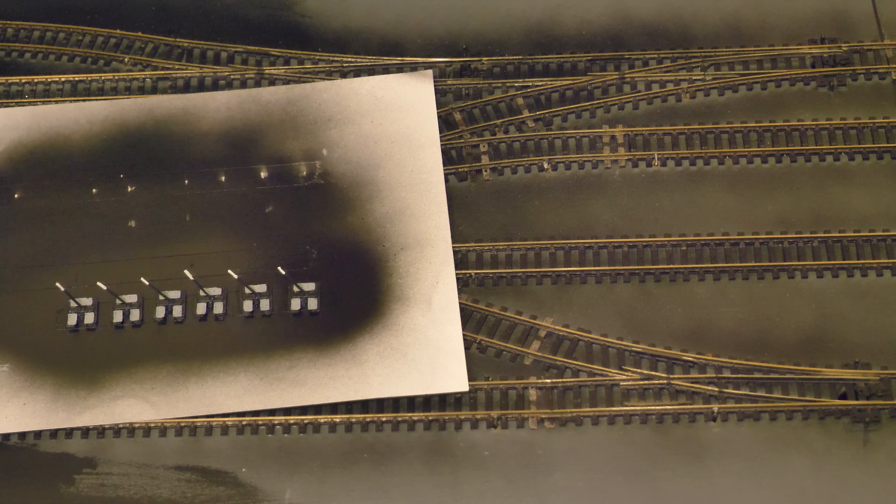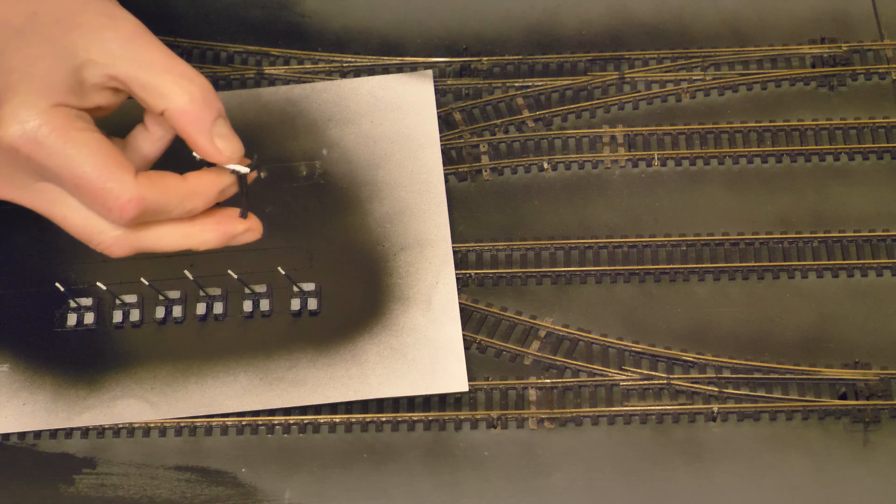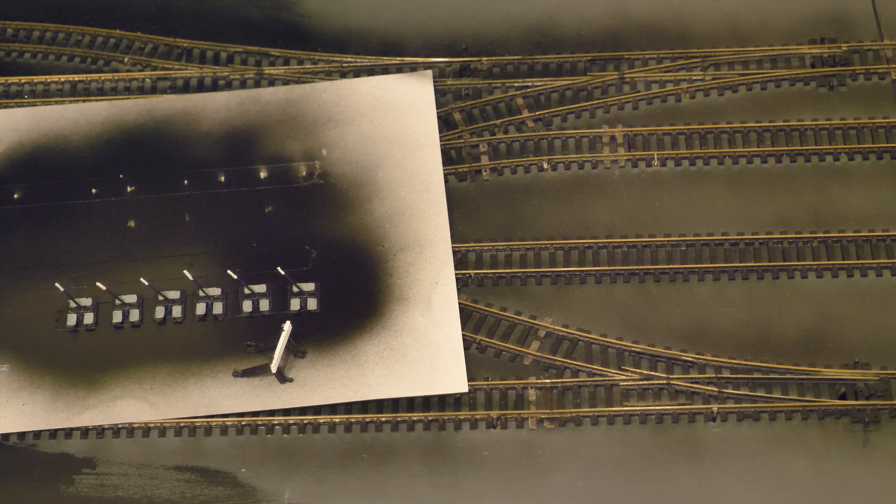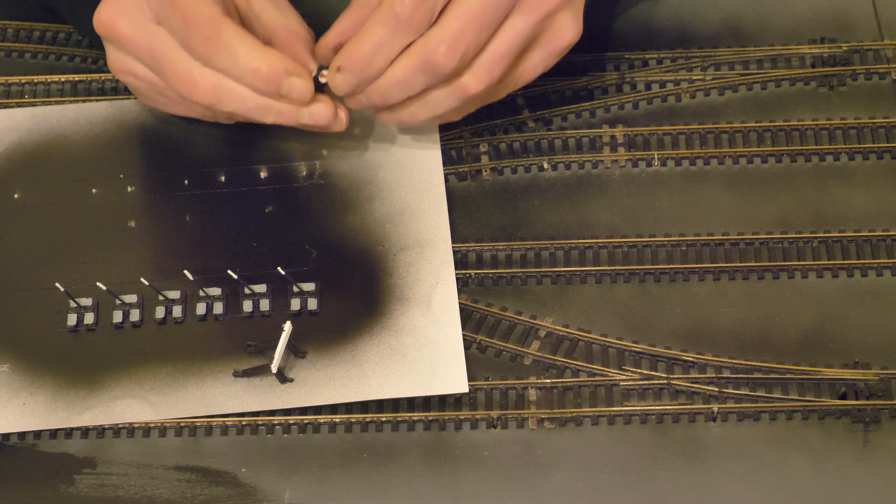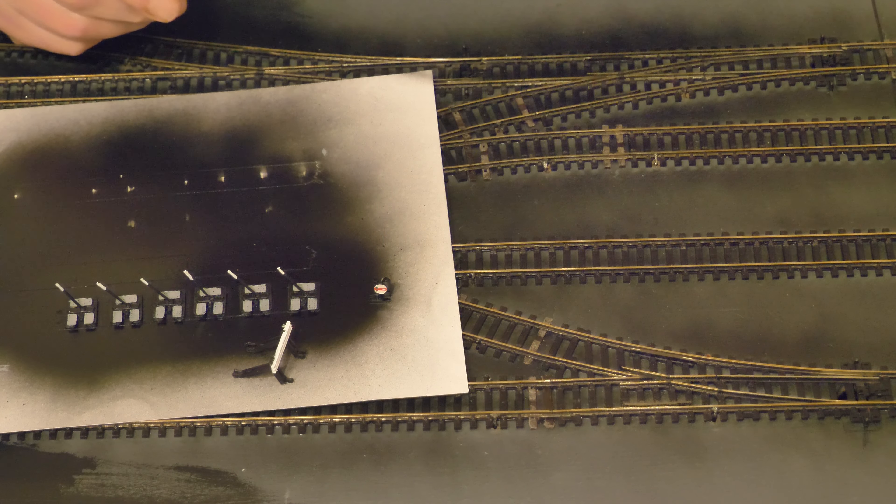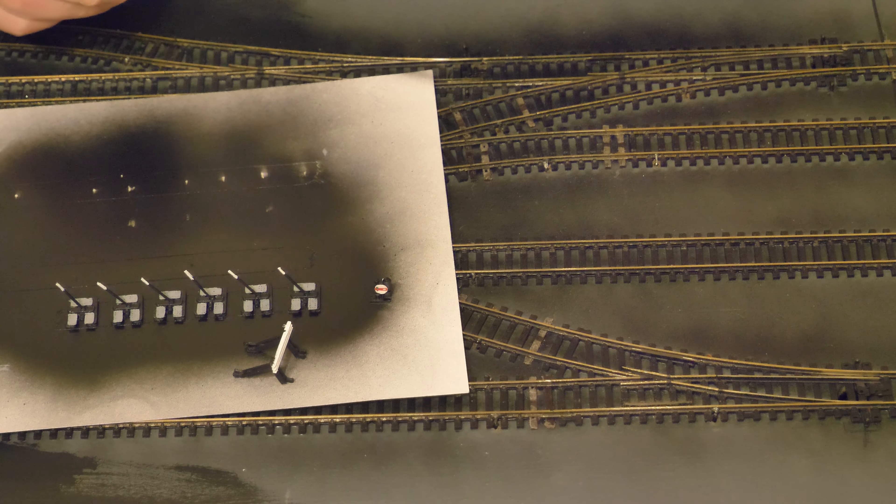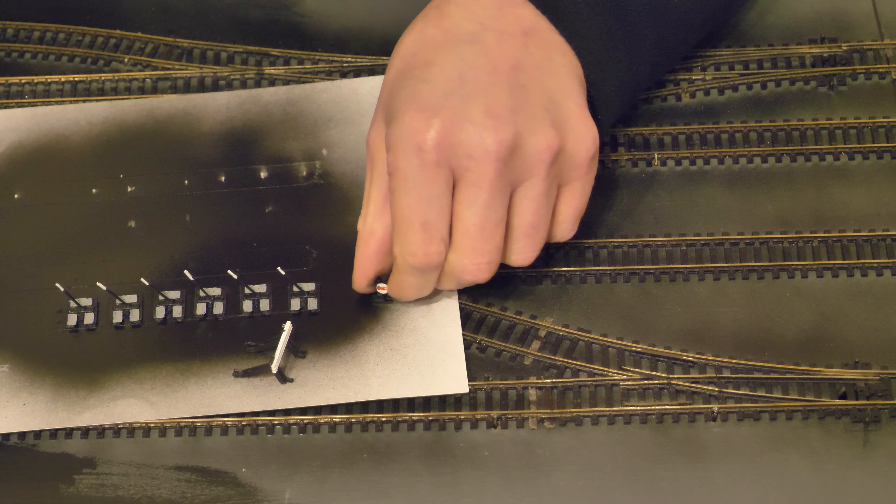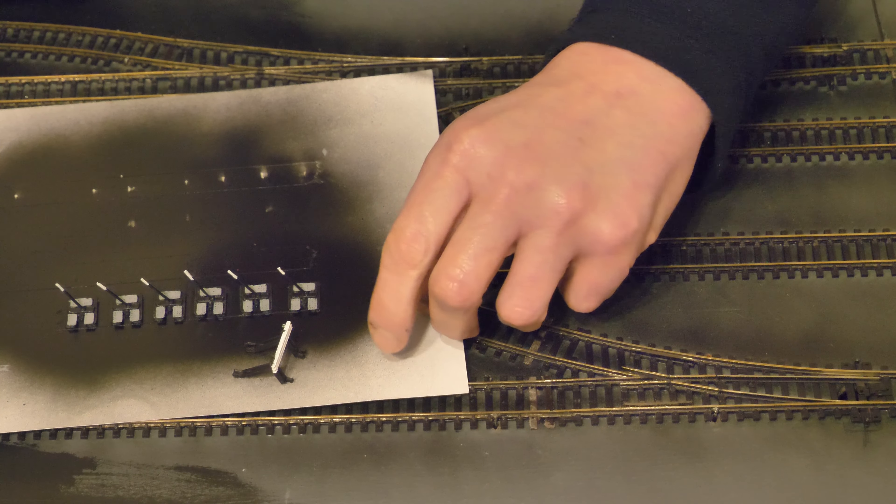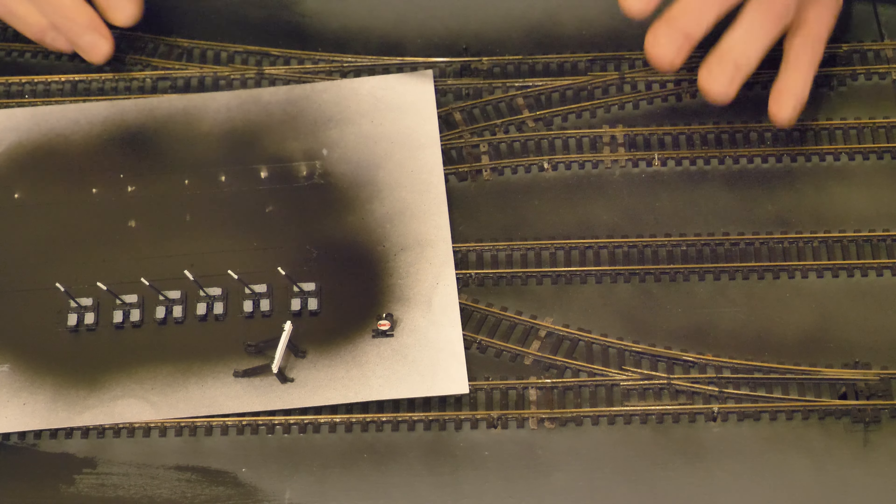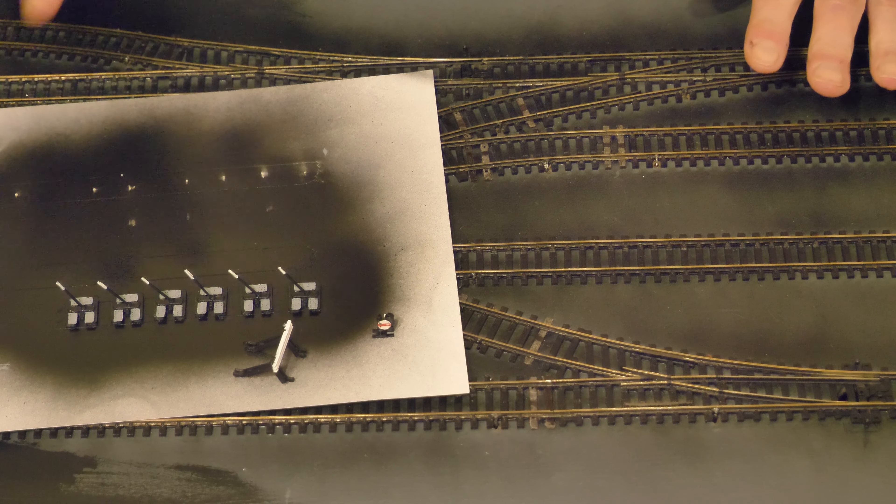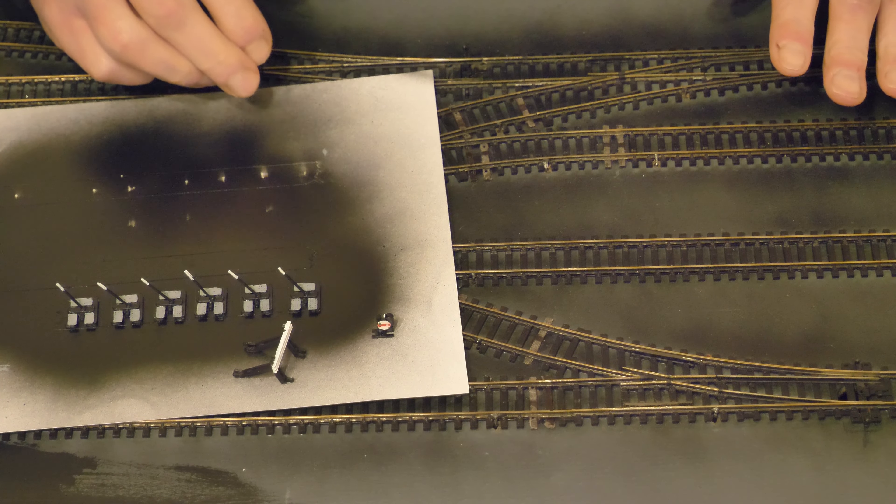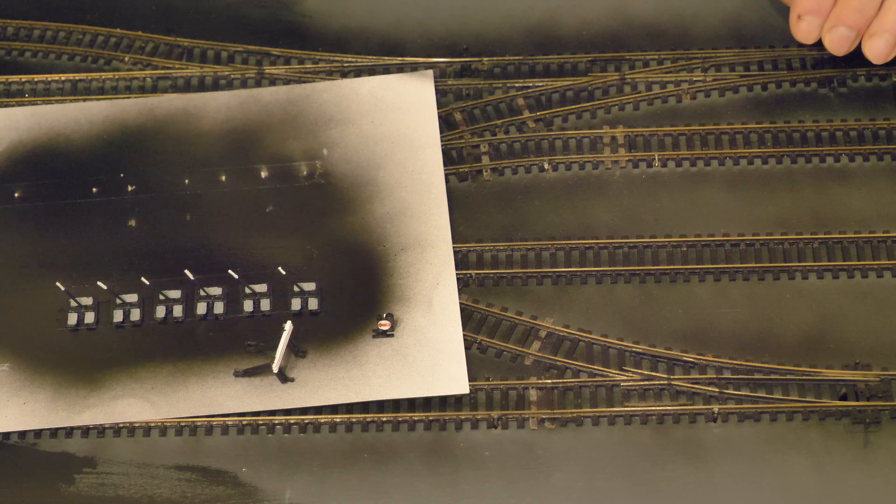I've painted up the buffer stops, point levers, and ground signals. So I've only just painted these, they should be dry now. Initially sprayed them all in black, painted the white details, and then the grey over the metal grills.